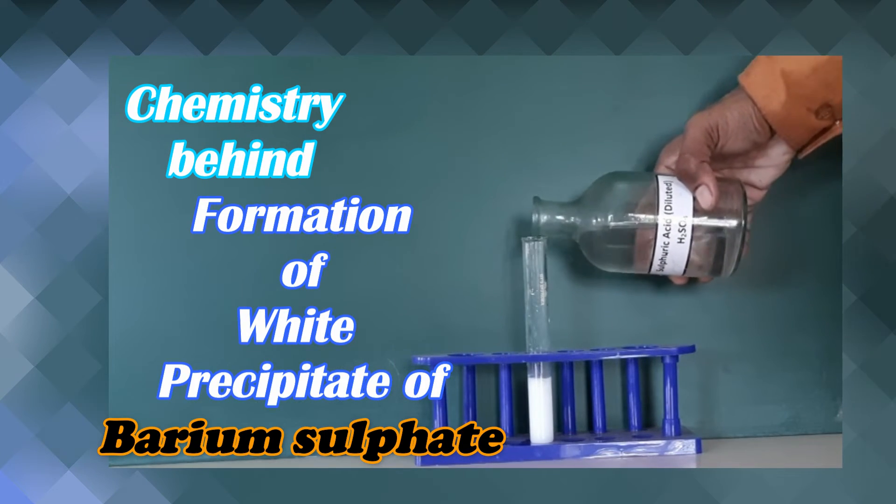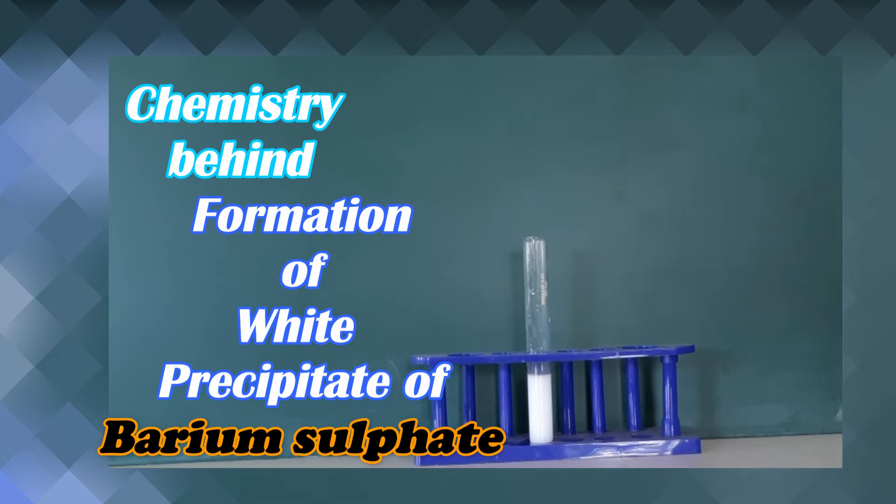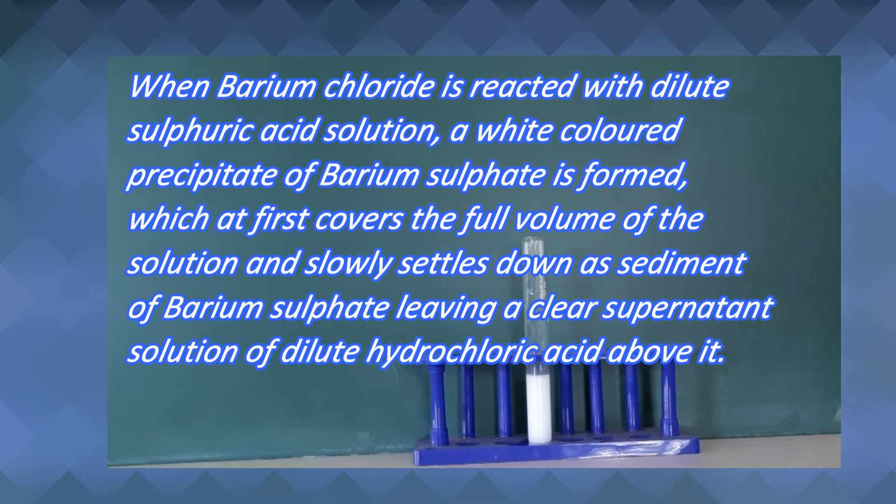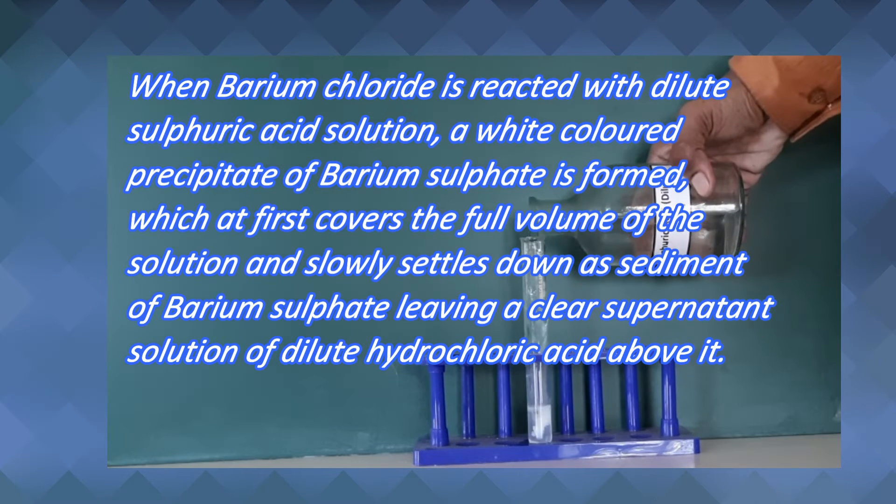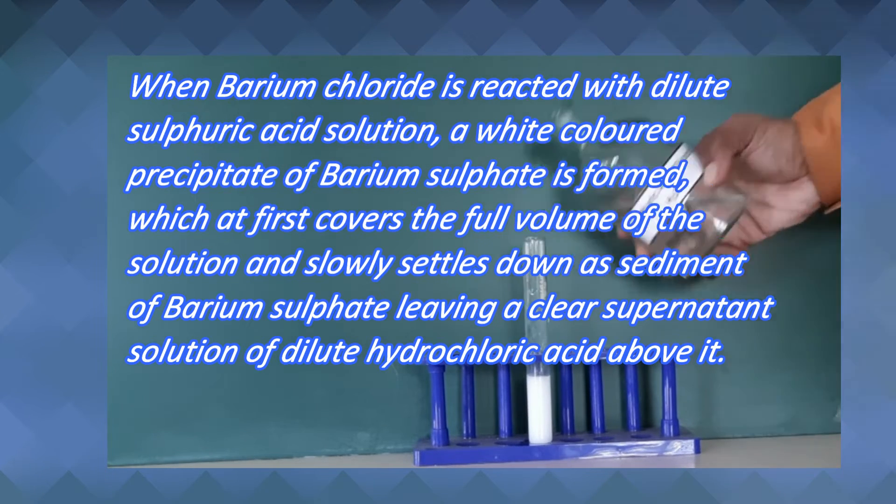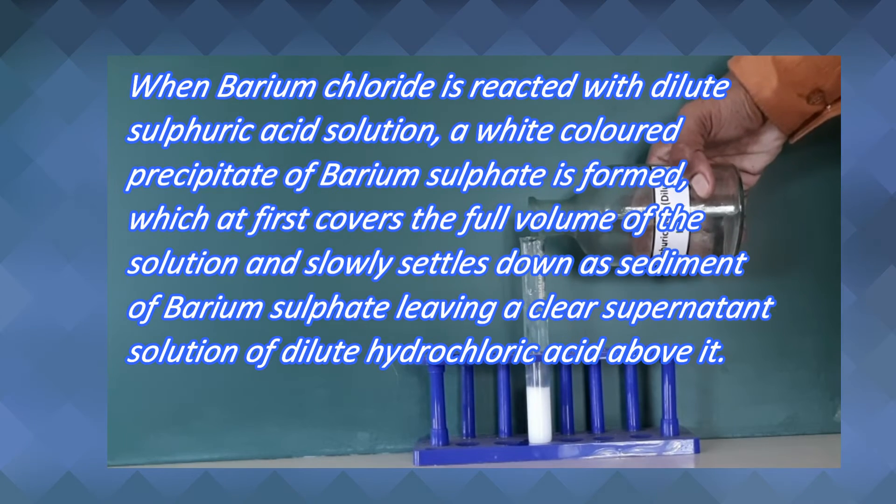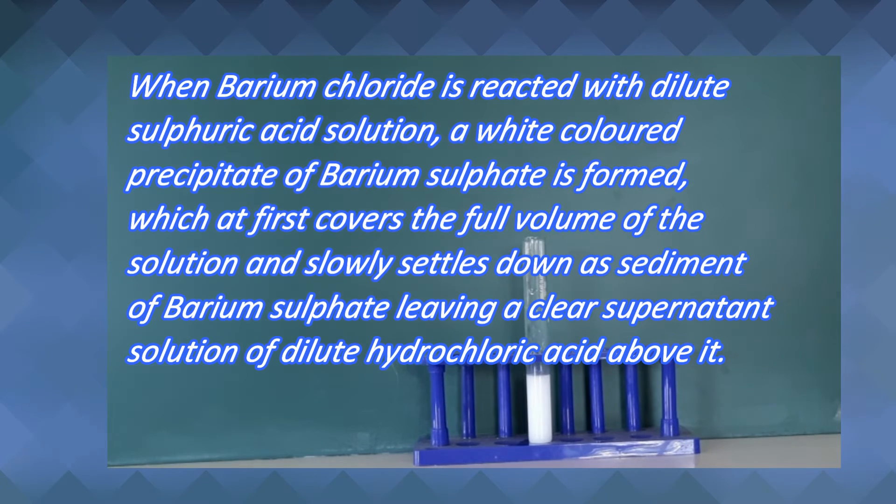Chemistry behind formation of white precipitate of barium sulphate: When barium chloride is reacted with dilute sulphuric acid solution, a white coloured precipitate of barium sulphate is formed, which at first covers the full volume of solution and slowly settles down as sediment of barium sulphate, leaving a